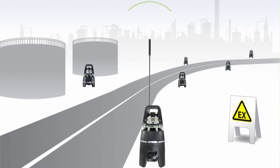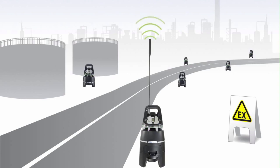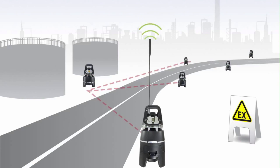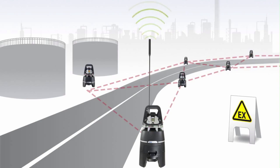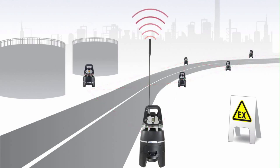Once it has been installed, the X-Zone COM starts data transmission via GSM. If gas now escapes again, Draeger X-Zone detects it within seconds and transmits the alarm to the other Draeger X-Zones. And the X-Zone COM forwards the alarm via GSM.